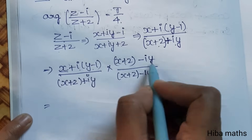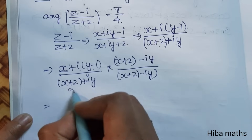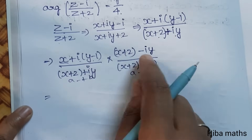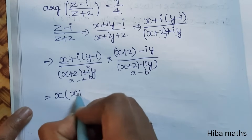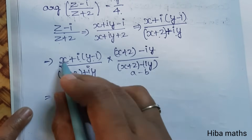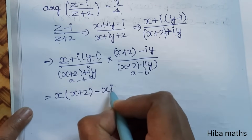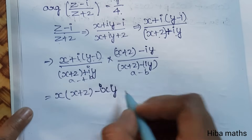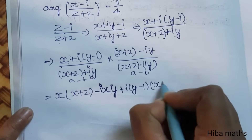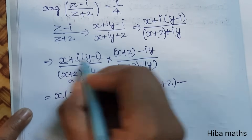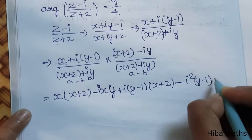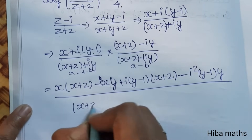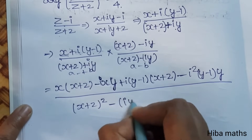Multiplying numerator: i(y minus 1) into both terms, using the identity (a + b)(a minus b) = a square minus b square. Expanding: x into (x plus 2), minus i·x·y, then i(y minus 1) into (x plus 2), minus i squared times y(y minus 1). The denominator becomes (x plus 2) whole square minus (iy) whole square.